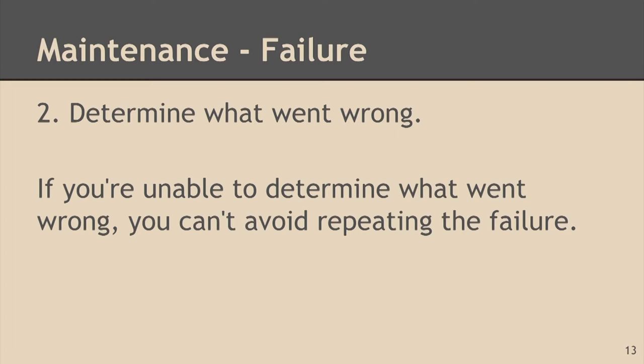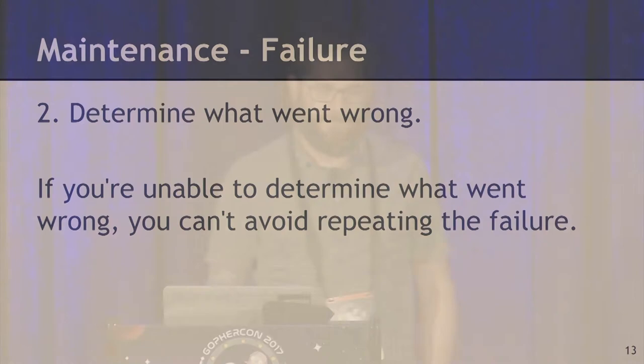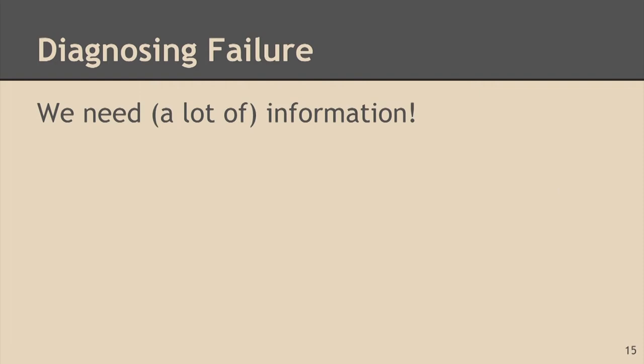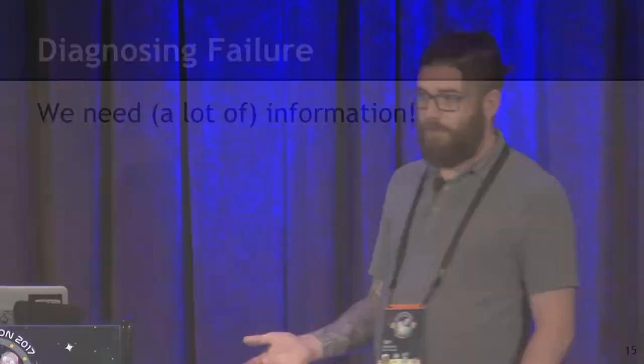The second goal is determining what went wrong. This is really important. How many people here have had something break and you end up not being able to figure out what went wrong and you just restart it? That's the worst. If you're unable to determine what went wrong, you can't avoid repeating the failure. There's something called the five whys — the general rule of thumb that if you ask why five times, you can figure out the root cause. The idea is to keep asking why until you get to the root cause. With this example: dead battery, alternator not functioning, alternator belt was broken, the belt wore out, the vehicle was not maintained — you get all the way down to the root cause, which in this case is human error. So if we're going to diagnose a failure, we need a lot of information. This is what operability really boils down to — it's about information.